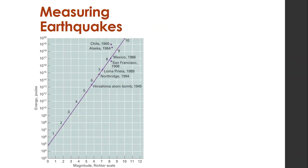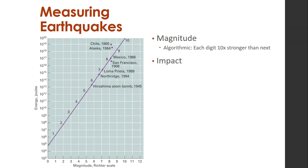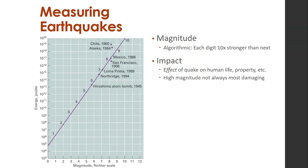We measure earthquakes in two ways. The first is magnitude, which is logarithmic — each digit is 10 times stronger than the next, so a 7.0 is 10 times stronger than a 6.0, which is 10 times stronger than a 5.0. The second way is by impact — the effect of the quake on human life or property. Most of the time we hear it in terms of magnitude: that was a 7.1 or a 6.5.